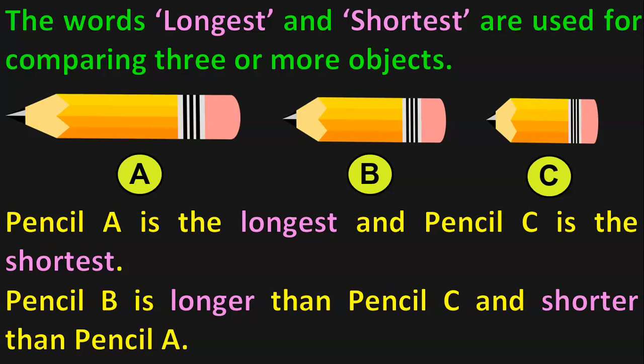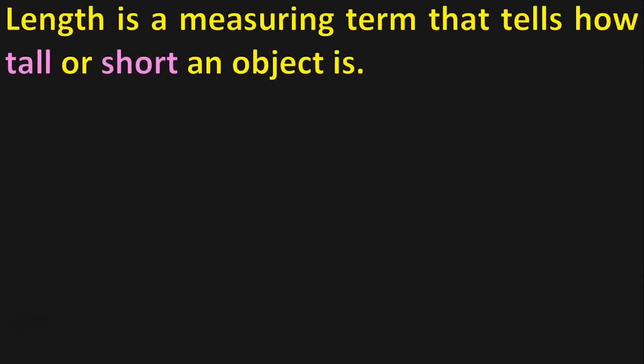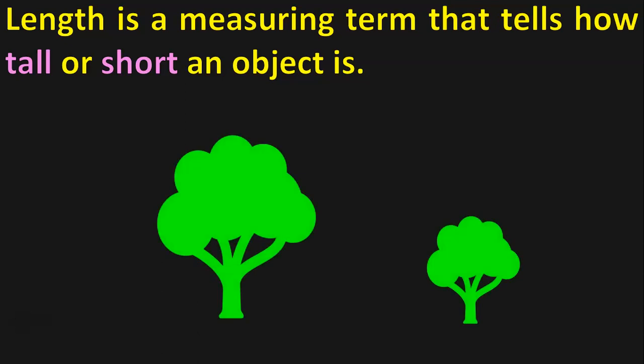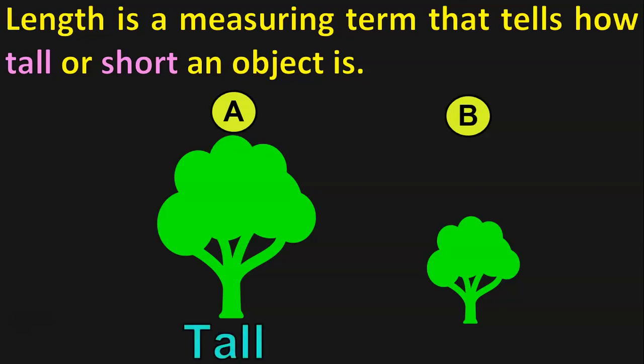Hope you have understood the term Long and Short. Now, let us learn the next terms in Measurement with respect to the topic Length. Length is a measuring term that tells us how tall or short an object is. Let us understand this with the example of two trees. Let us name them Tree A and Tree B. Which tree is tall here? Tree A is tall and Tree B is short.